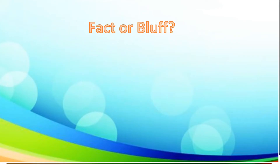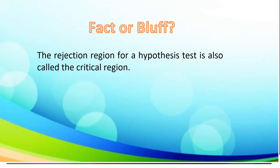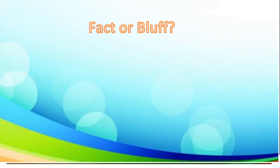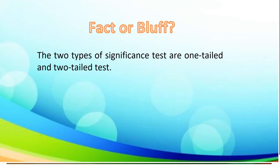Let's take another one. The rejection region for a hypothesis test is also called a critical region. That is a fact! And the two types of significant test are one-tailed and two-tailed test. That is also a fact!